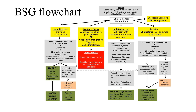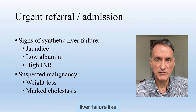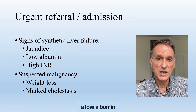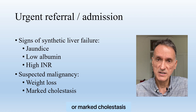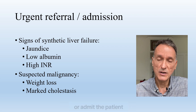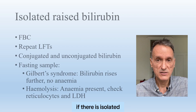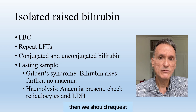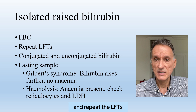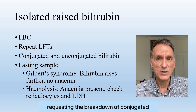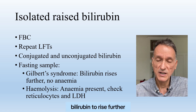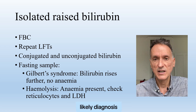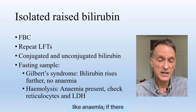The British Society of Gastroenterology has produced a flowchart to guide us through the process, which you can access in the episode description. In summary, if there are signs of acute liver failure, like unexplained clinical jaundice, a low albumin or a high INR, or if there is suspicion of malignancy, for example because of weight loss or marked cholestasis, we should urgently refer or admit the patient. If there is isolated raised bilirubin but no clinical concerns, we should request a full blood count and repeat the LFTs on a fasting sample, requesting the breakdown of conjugated and unconjugated bilirubin. Fasting causes the unconjugated bilirubin to rise further in Gilbert's syndrome, so this is the likely diagnosis when this happens and there is no evidence of haemolysis like anaemia.